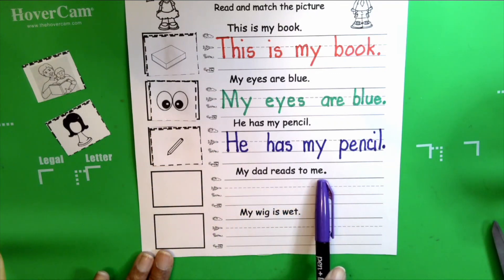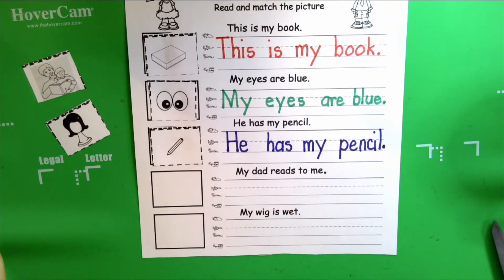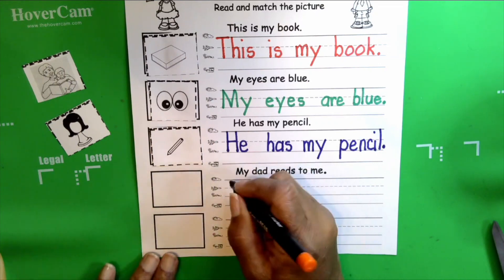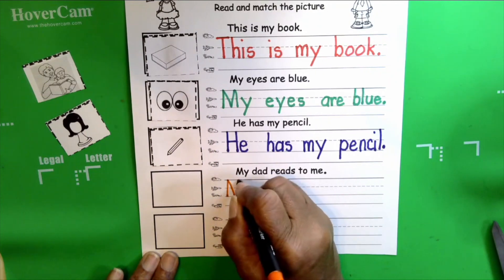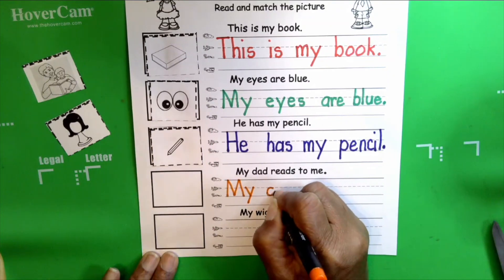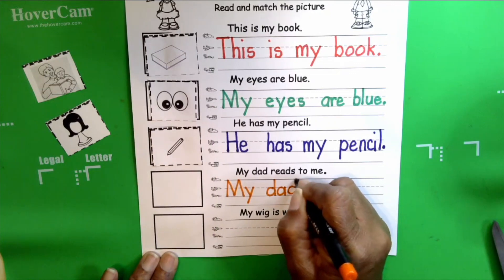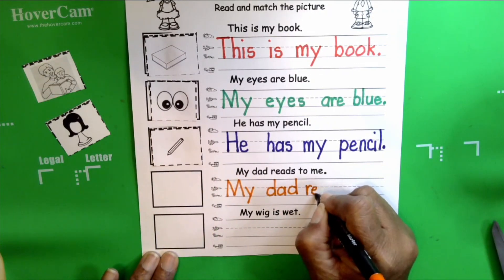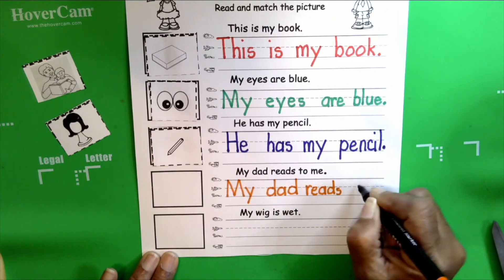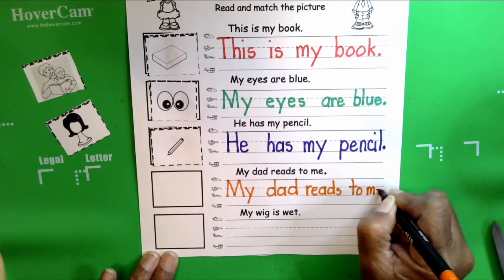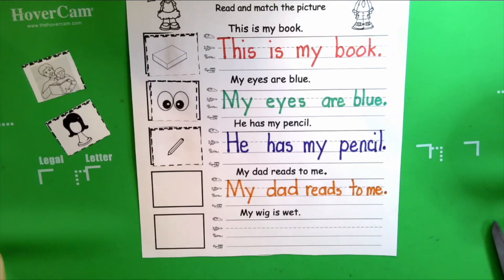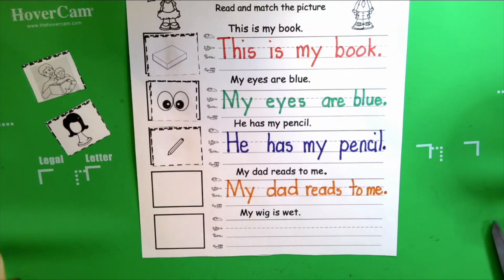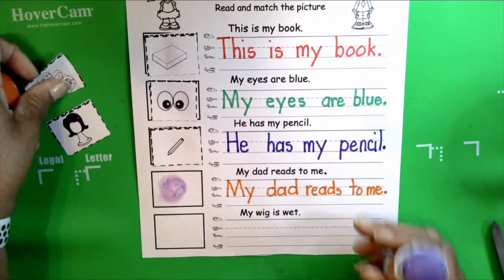Our next sentence is: my dad reads to me. Your turn — my dad reads to me. I hope you all are getting a story read to you at night — so much fun! My dad reads to me. Can you find the picture of dad reading to his child? He's reading to his little boy. There it is.